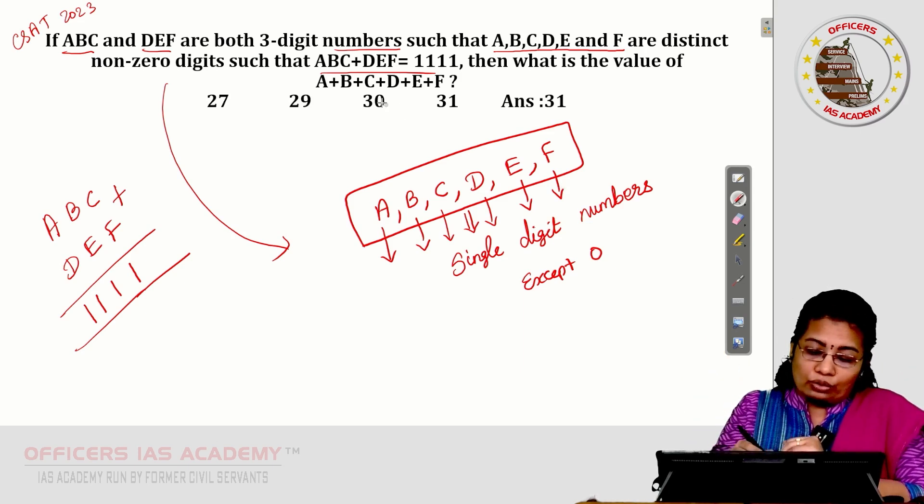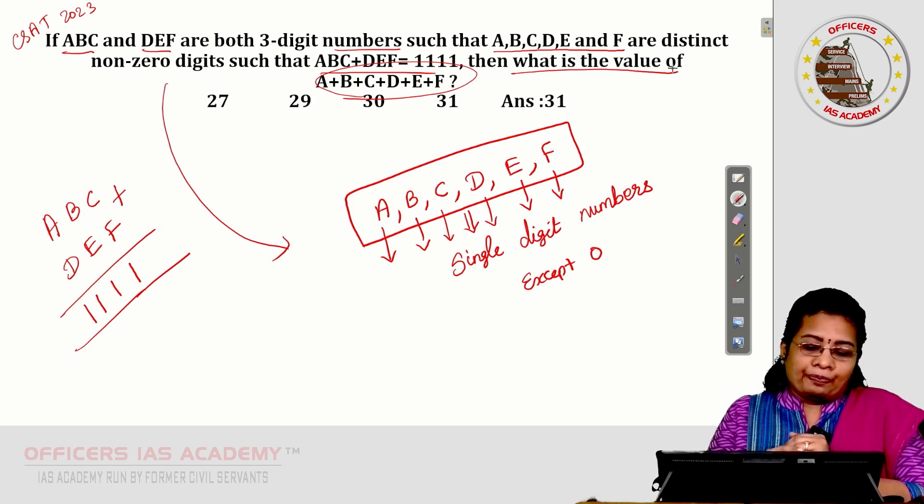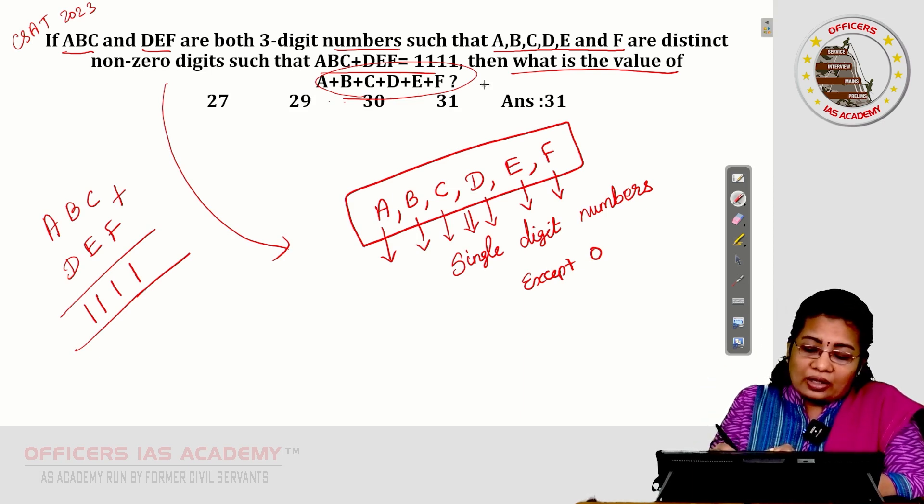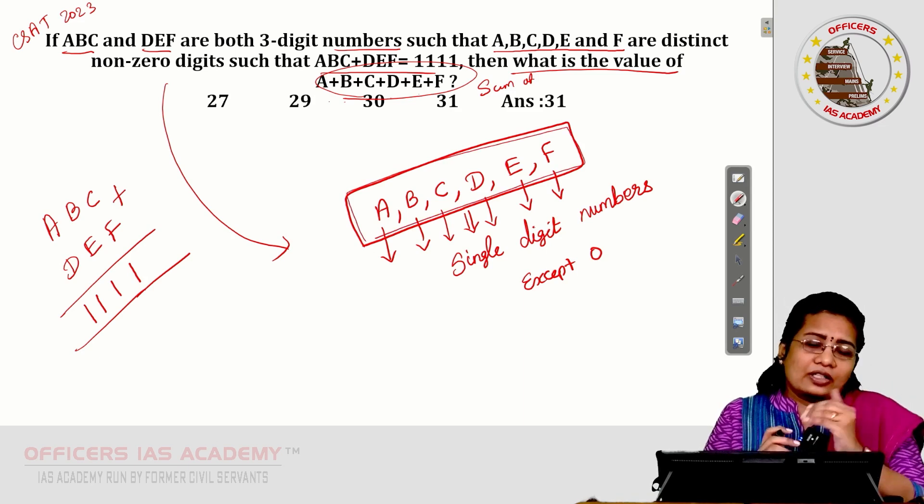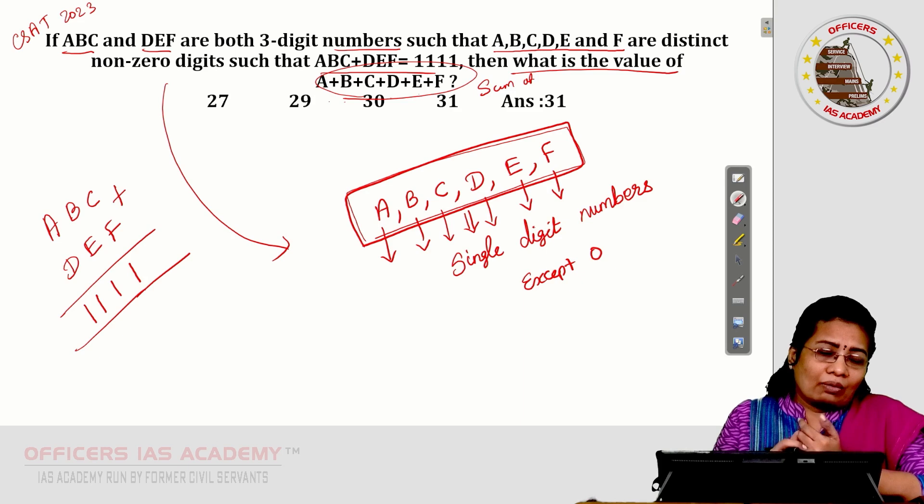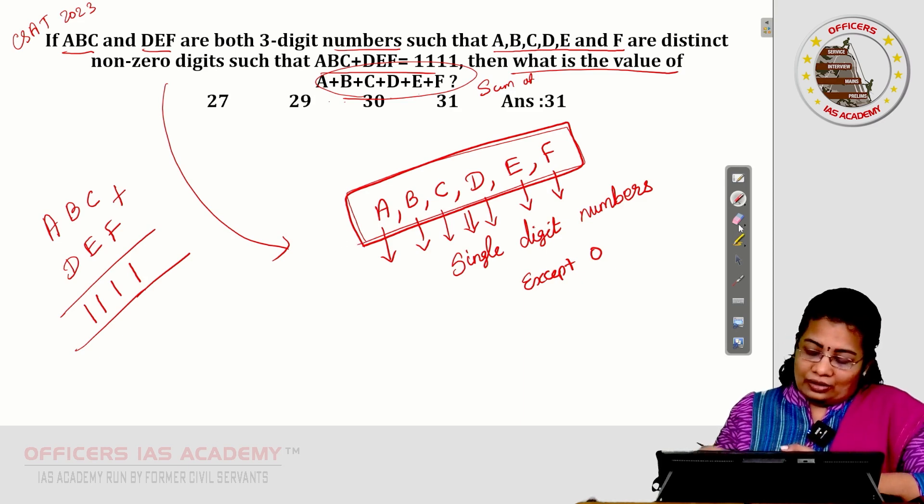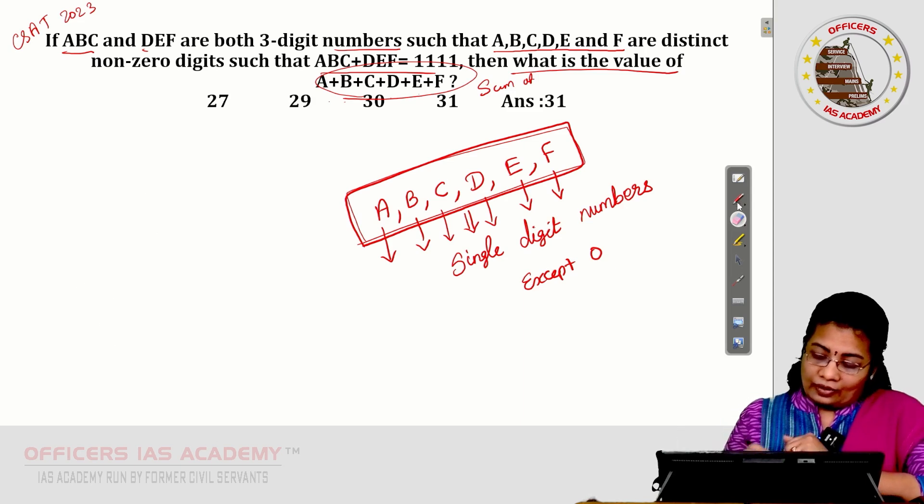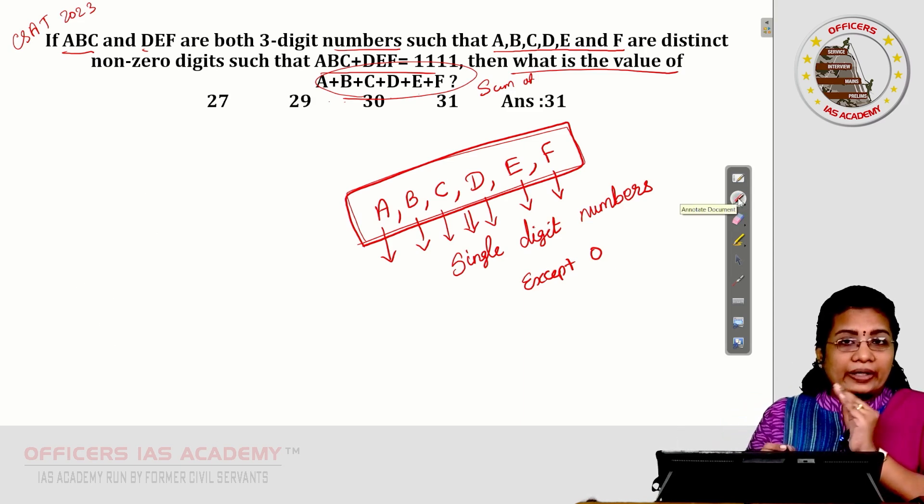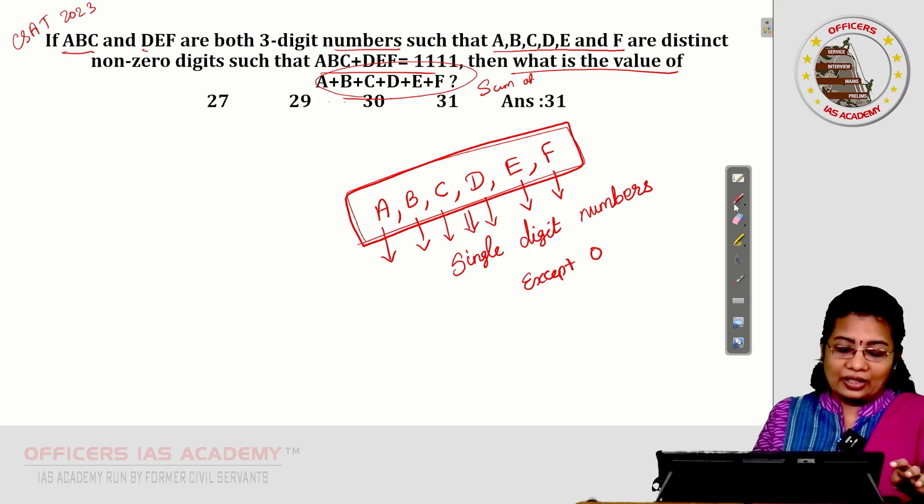The question is asking you to find just the sum of A, B, C, D, E, F together. Just we need to find the sum means there are so many things we can apply in the shortcut. Instead of finding the accurate value for A to F, just we can get the idea.